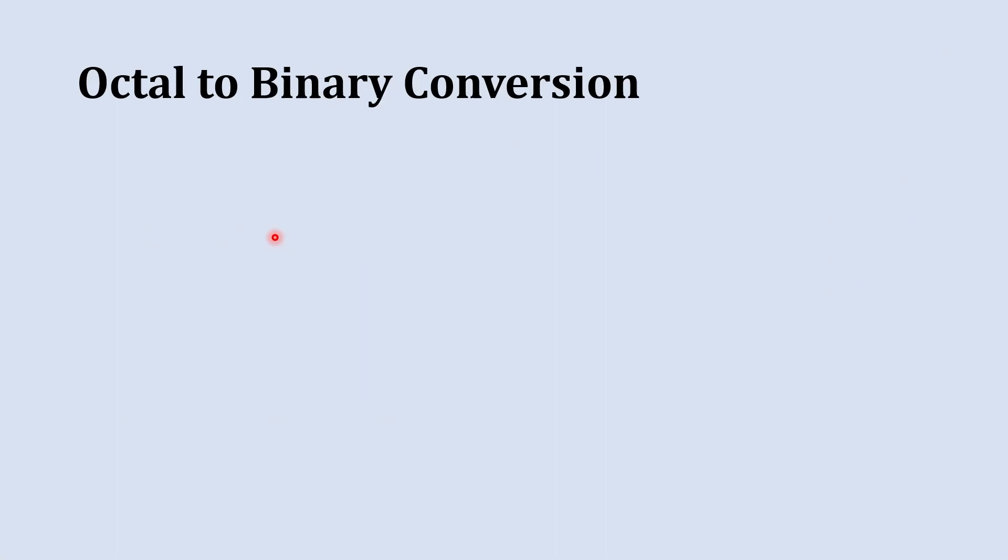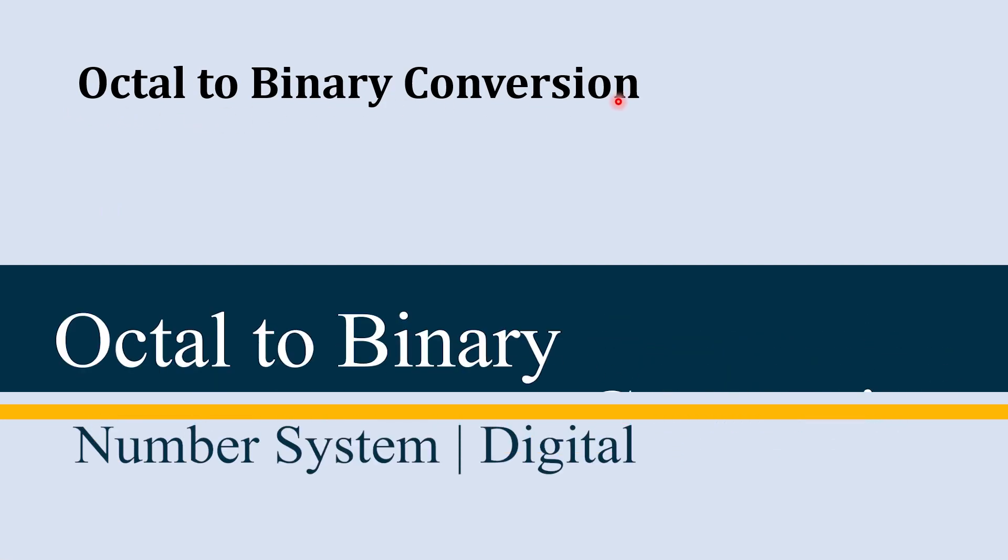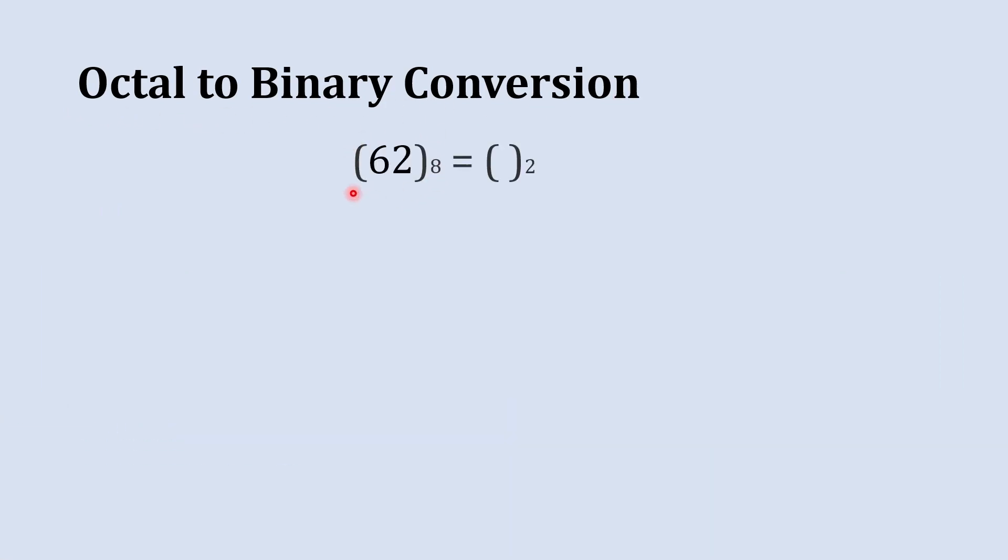Now after writing the answer, let's move ahead to the next section. Here we are quickly going to learn how to convert an octal number into binary. So here 62 is our octal number and we are going to convert it to binary. Let's write 62 in this manner.